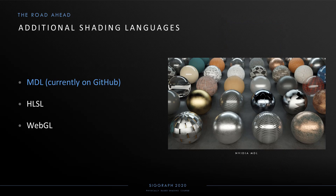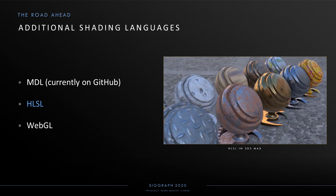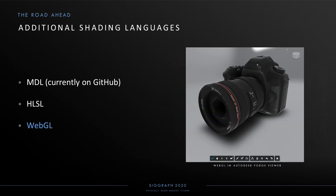A second area is the extension of MaterialX code generation to new shading languages beyond OSL and GLSL. At the GPU Technology Conference earlier this year, Autodesk and NVIDIA presented a new MaterialX code generator for the Material Definition Language (MDL), and the code for this project can be found on GitHub. Autodesk has also been developing early support for HLSL, seen here in a preview build of 3ds Max where generated OSL has been cross-compiled to HLSL for the real-time viewport. The Autodesk Forge team has also been working on code generation for WebGL, including new JavaScript bindings for the MaterialX API.